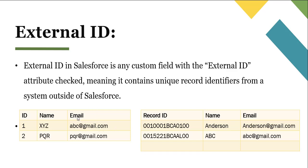While performing the update or upsert, the external file's email field matches with the Salesforce org's email field. Here abc@gmail.com exists in both, so the name ABC in the Lead object gets replaced with XYZ from the external file. In the second row, pqr@gmail.com does not exist in the Salesforce org, so a new record gets created and a Salesforce record ID gets assigned. This is how the external ID works in Salesforce.